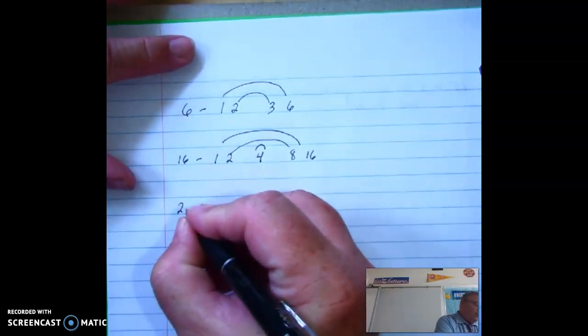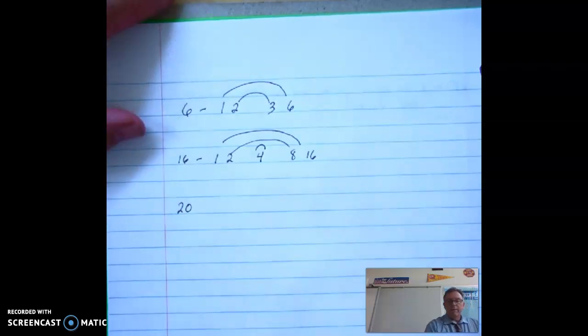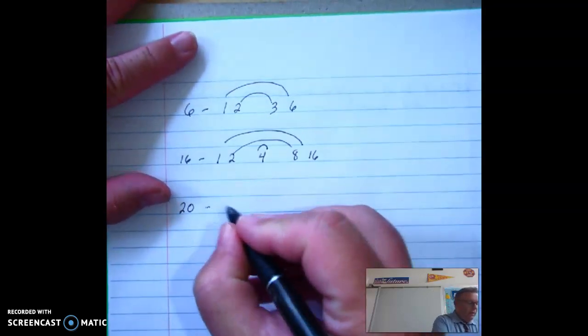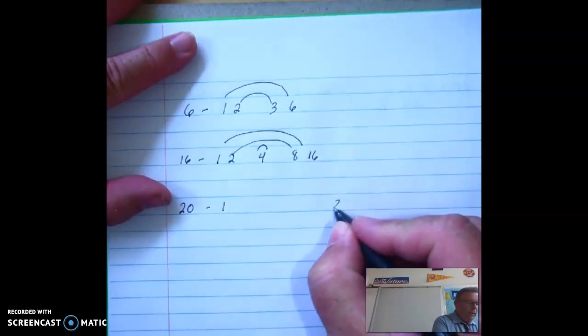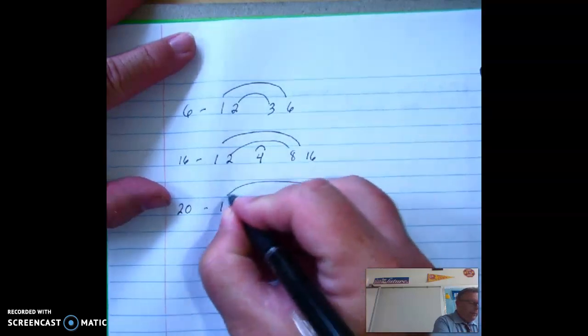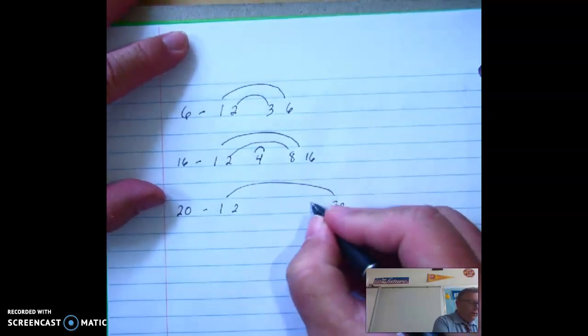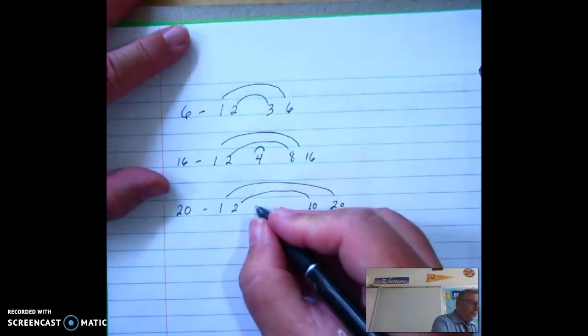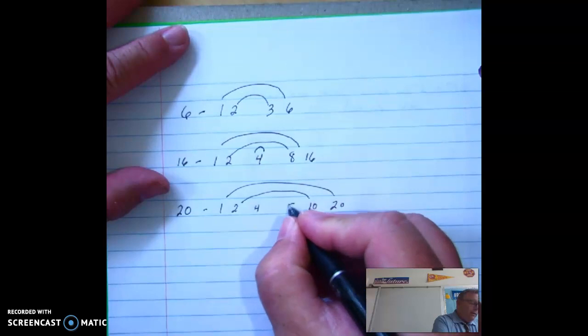I'm going to give you one to try. So I'm going to give you 20. So you want to list the factors in the world. And here's what you should have. You should have one and 20. You should have two and 10. No three. You should have four and five.